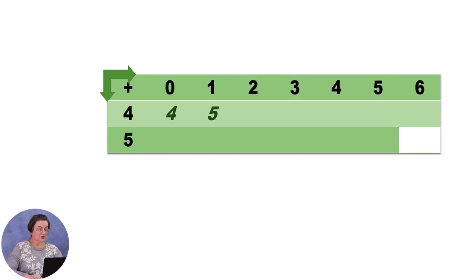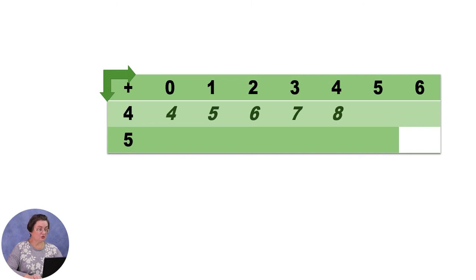Продолжаем: 2 плюс 4 — получится 6. Следующее число: 3 плюс 4 — получится 7, записываем под тройкой. 4 плюс 4 — будет 8, записываем под четвёркой. 5 плюс 4 — будет 9, записываем под пятёркой. 6 плюс 4 — получится 10, записываем. Нижнюю строку таблицы вы заполните самостоятельно.